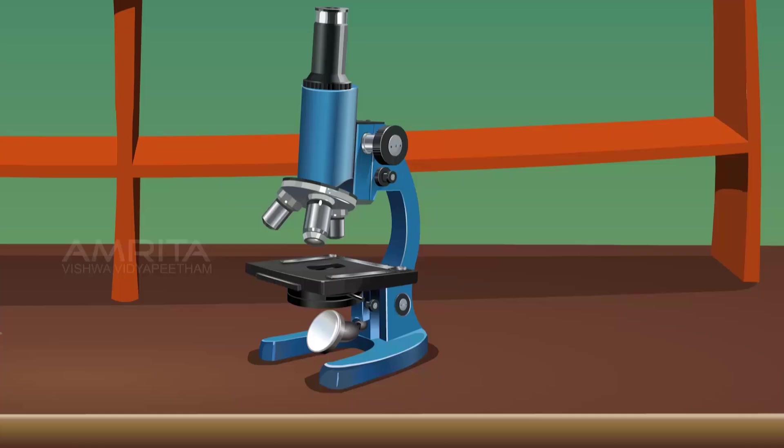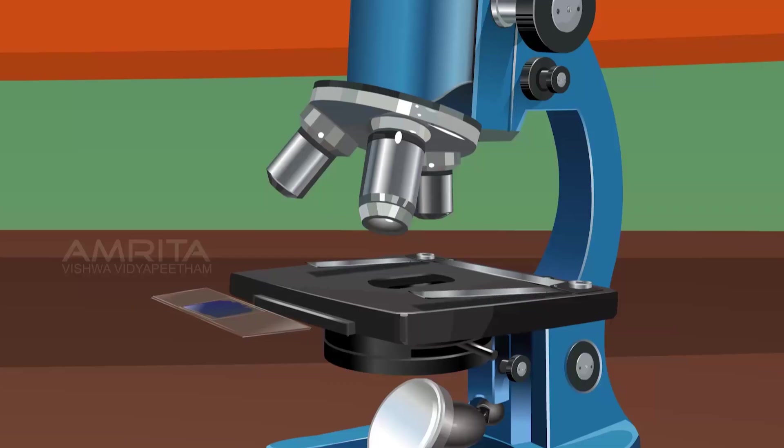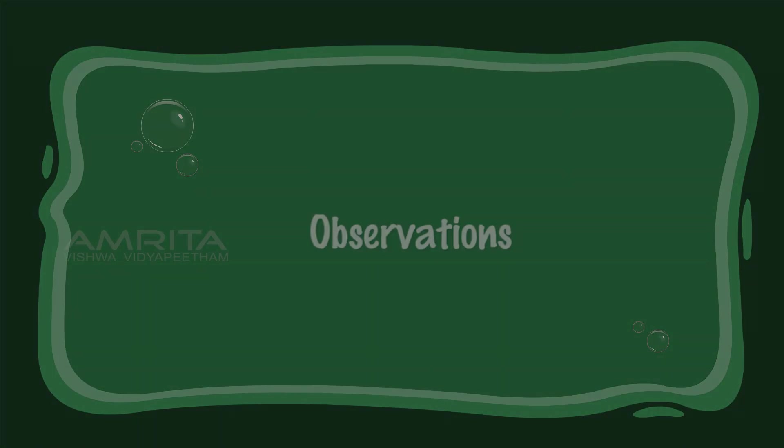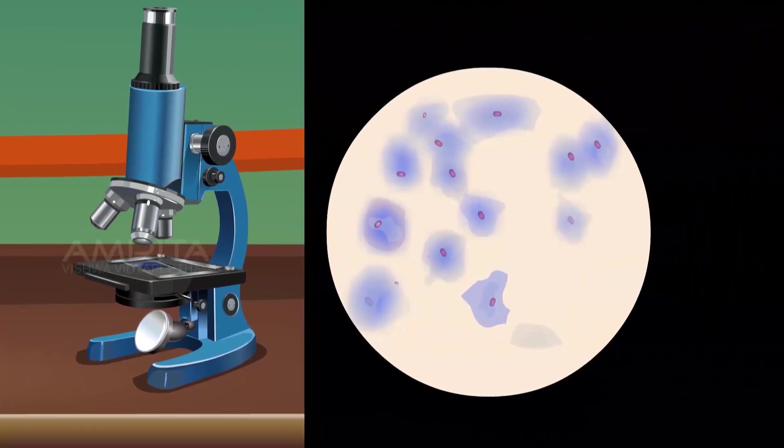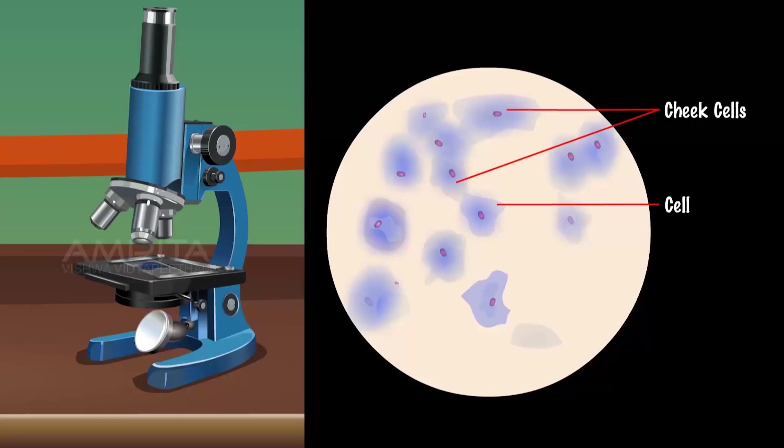View the slide under the compound microscope. Observations: A large number of flat and irregular shaped cells are observed. The cells do not have a cell wall. However, each cell has a thin cell membrane. A deeply stained nucleus is observed in the centre of each cell. No prominent vacuole is observed in the cells.